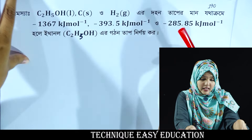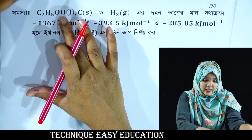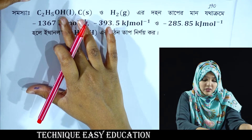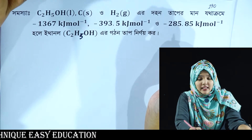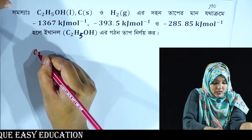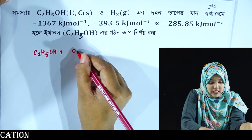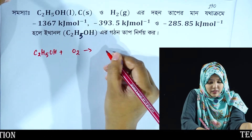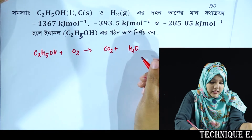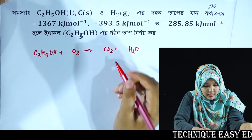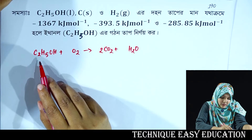The first one we have to do is ethanol. C₂H₅OH — this gives carbon dioxide and water.